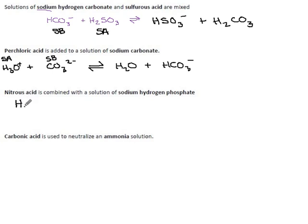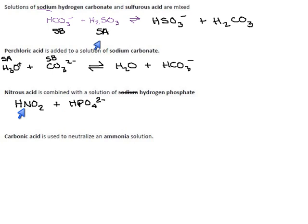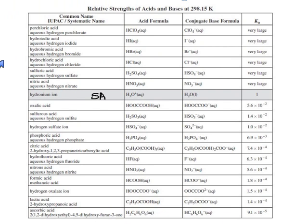Nitrous acid HNO₂ reacts with sodium hydrogen phosphate. Sodium never does anything in acid-base reactions, so we ignore it. Hydrogen phosphate, HPO₄²⁻, is the interesting part — the one with only a single hydrogen, as opposed to dihydrogen phosphate. Both HNO₂ and hydrogen phosphate contain hydrogen so either could theoretically be an acid. Looking down the table: HNO₂ appears first — nitrous acid is our strongest acid.